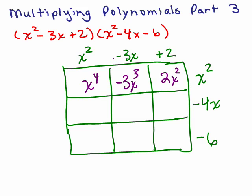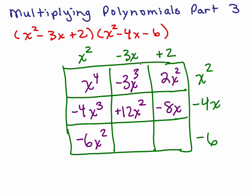It doesn't matter the order — I could have done x squared times x squared first. Going left to right: x squared times negative 4x is negative 4x cubed, negative 3x times negative 4x is plus 12x squared, and 2 times negative 4x is negative 8x. Then the last row: x squared times negative 6 is negative 6x squared, negative 3x times negative 6 is plus 18x, and 2 times negative 6 is negative 12.